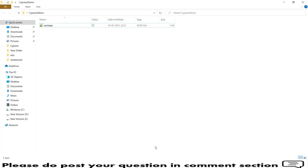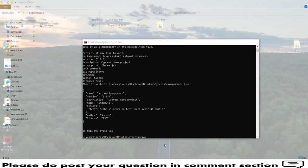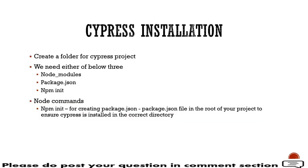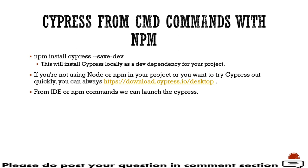This part is done. Next we need to install Cypress. To install Cypress as a dev dependency, the command is: npm install cypress --save-dev. In case you want to install a particular version, you can do npm install cypress at the rate followed by the version number. For now we will use the dev dependency command.